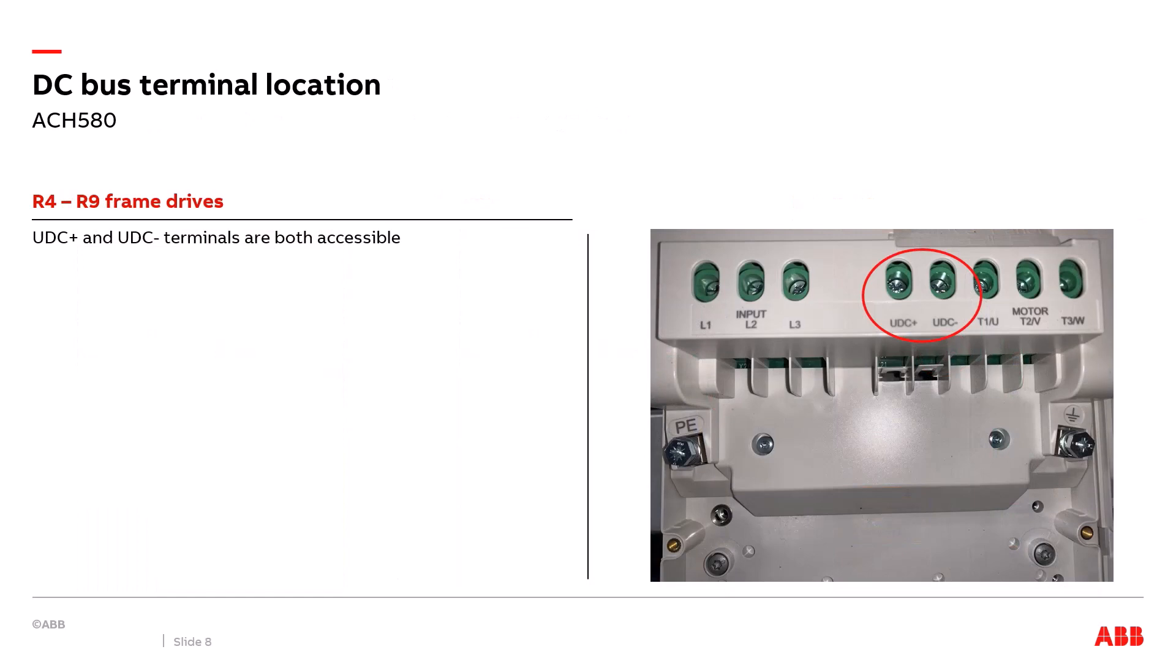On larger horsepower drives access to both the positive and negative DC bus is usually easier. On the 580 series they include the R4 through R9 frame drives. Access to the UDC plus and UDC minus terminals are both right next to each other as shown in the red oval in the image on the right.